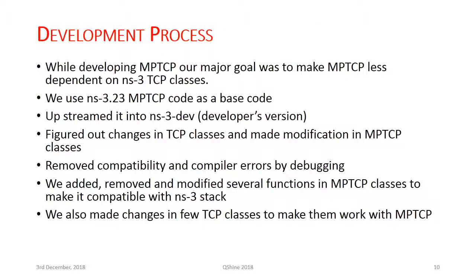Regarding the development process: our major goal while developing MPTCP was to make it less dependent on NS3 TCP classes. We started with Matthew Kudron's NS3.23 code as a base and upstreamed it into NS3 dev, the developer's version. We identified changes to TCP classes and made modifications in MPTCP classes, removed compatibility and compiler errors through debugging, removed and modified several functions in MPTCP classes for compatibility, and made corresponding changes to TCP classes to work with MPTCP.